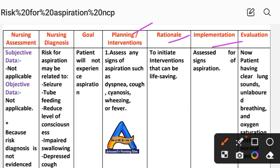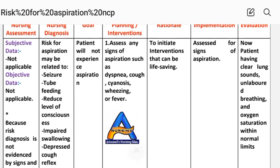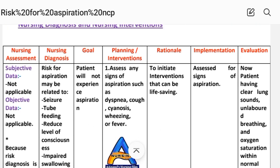Intervention one: Assess for any signs of aspiration such as dyspnea, cough, wheezing, or fever. Rationale: To initiate interventions that can be life-saving. Implementation: Assess for signs of aspiration.